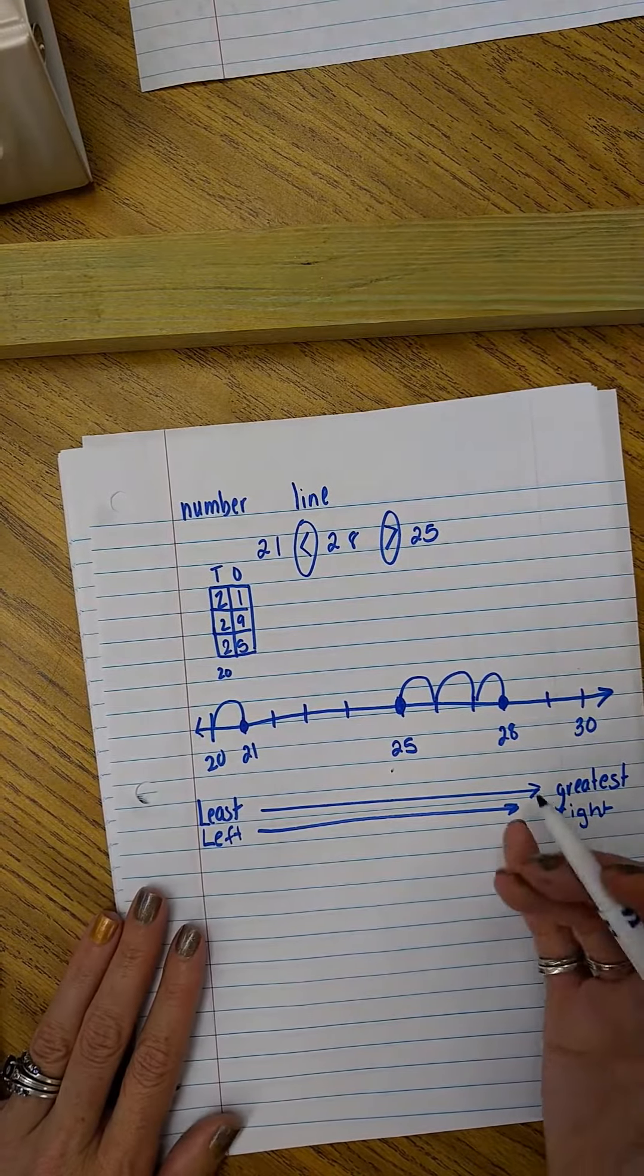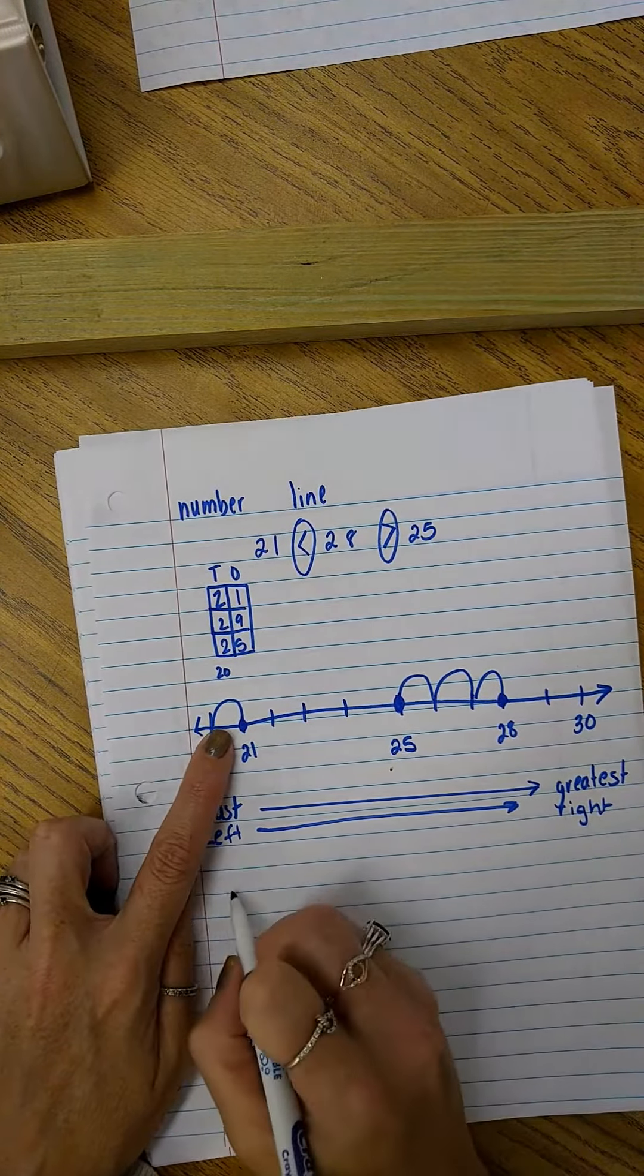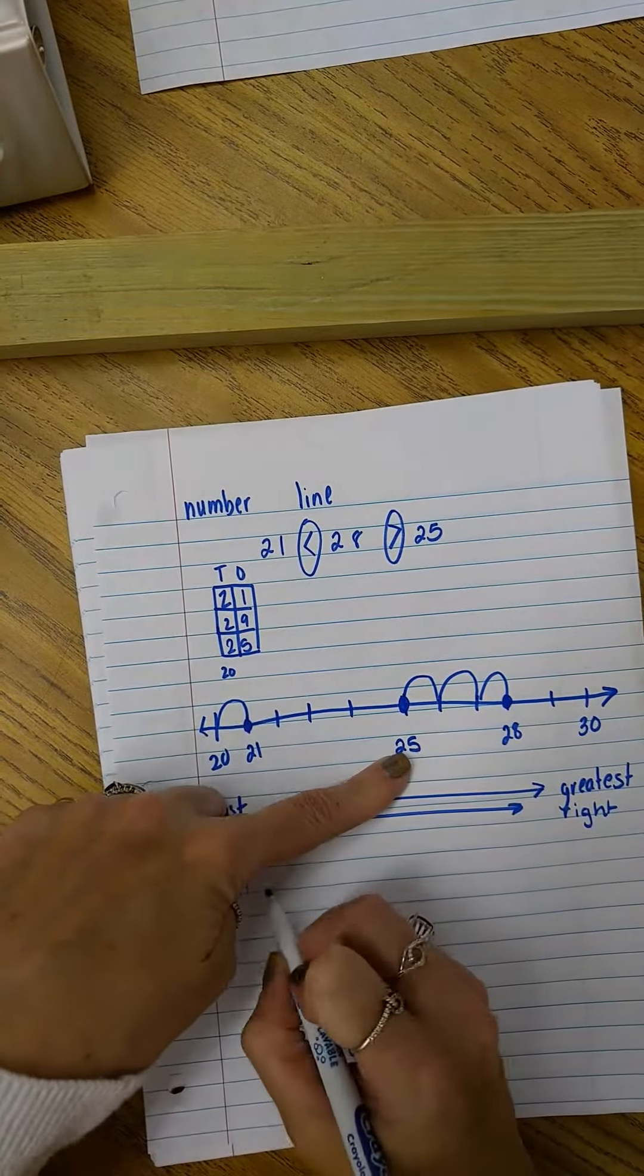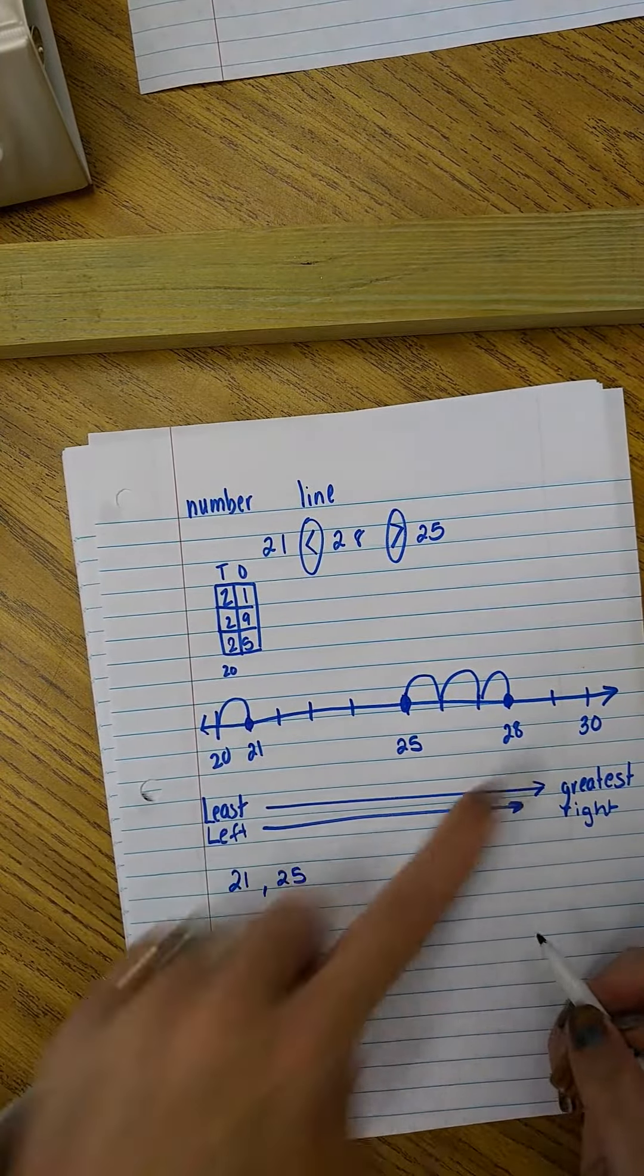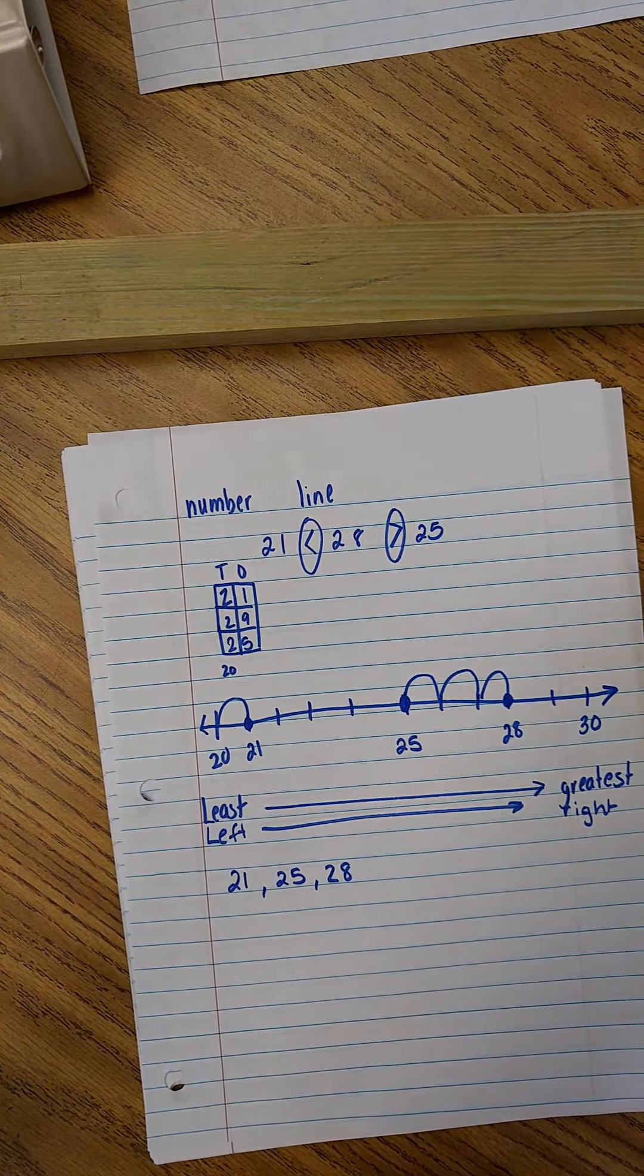And now if I needed to order them in order from least to greatest or greatest to least, I would just use my number line. 21 from least to greatest, then I would go 25, and then I would go 28. So that was their work for today.